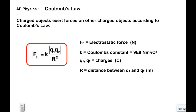Q1 and Q2 are the two charged objects in question, measured in Coulombs. R is the distance between Q1 and Q2, which should be measured in meters.